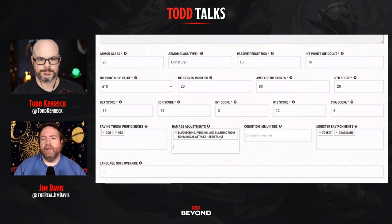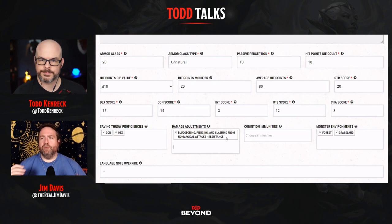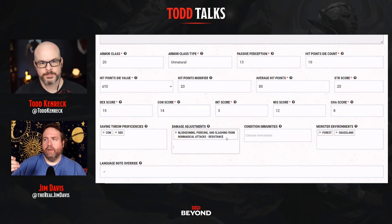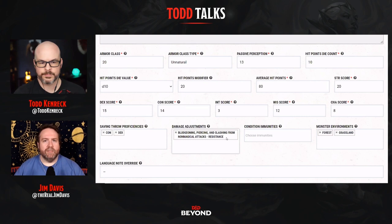That touches on a design philosophy with monsters: it's very easy to create an unbeatable monster. You could go through the immunity list and make it immune to every condition. The trick is finding the balance between portraying what you want with a monster — telling its story — without making it so difficult that the party is no longer having fun. It's different for every group, but a warning: it's very easy to create an unbeatable monster.